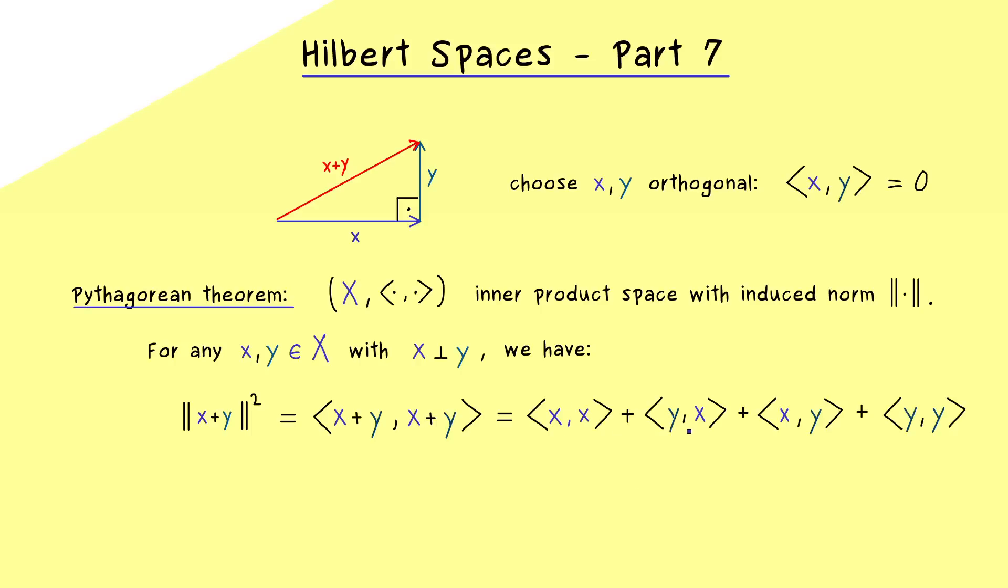Here is what we get. And you see in the middle we have two mixed terms, and there comes our orthogonality in. Both terms have to vanish by assumption. So only the two inner products x,x and y,y remain. And these can be rewritten with the norm squared again. So we get the length of x squared plus the length of y squared. And that's it.